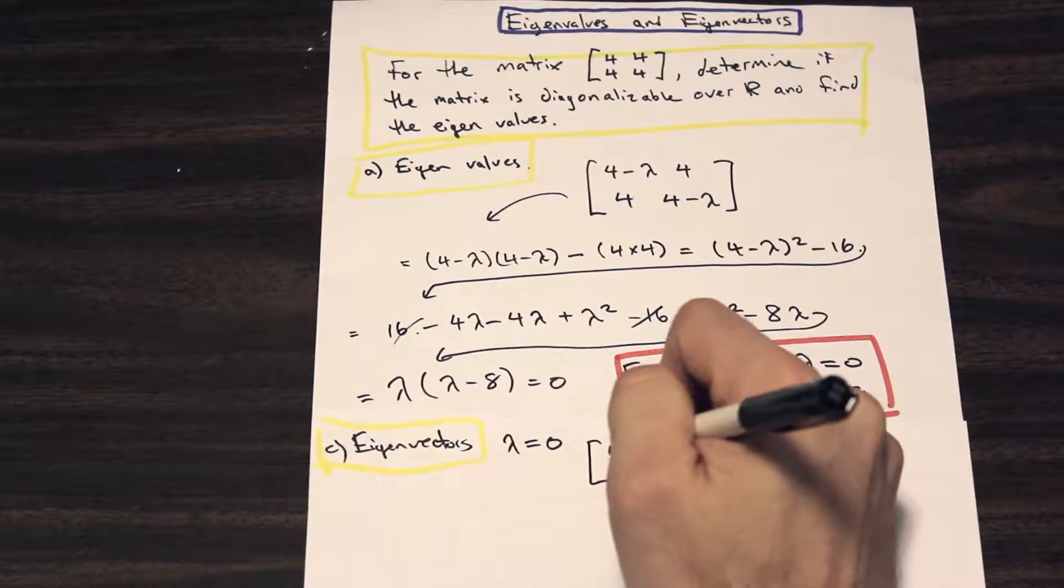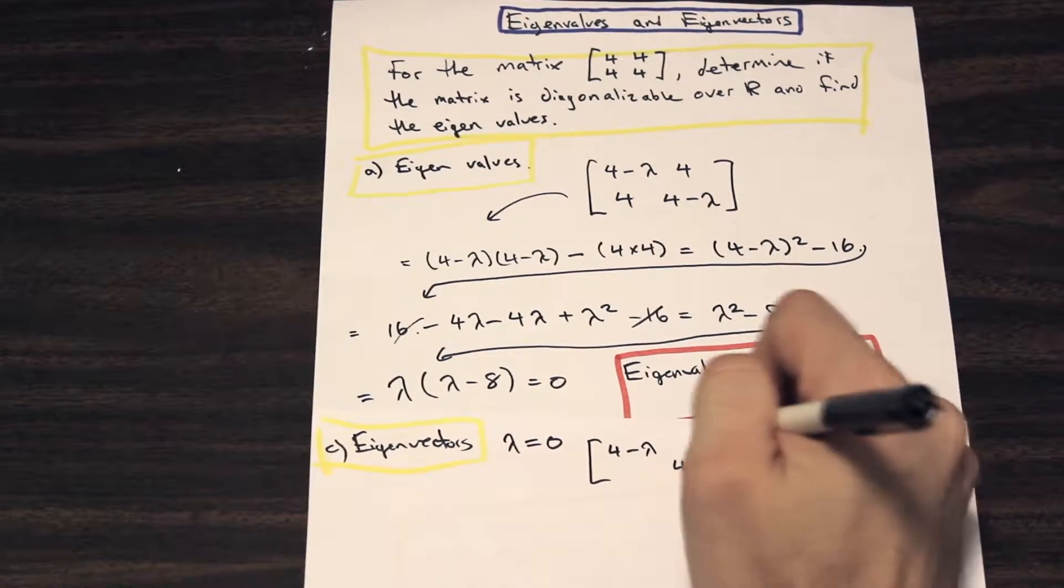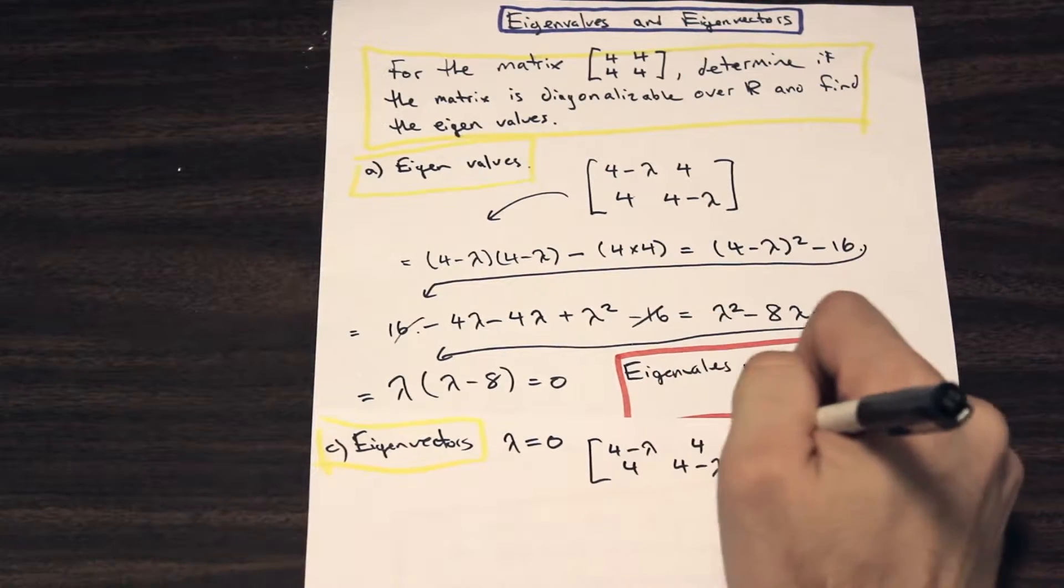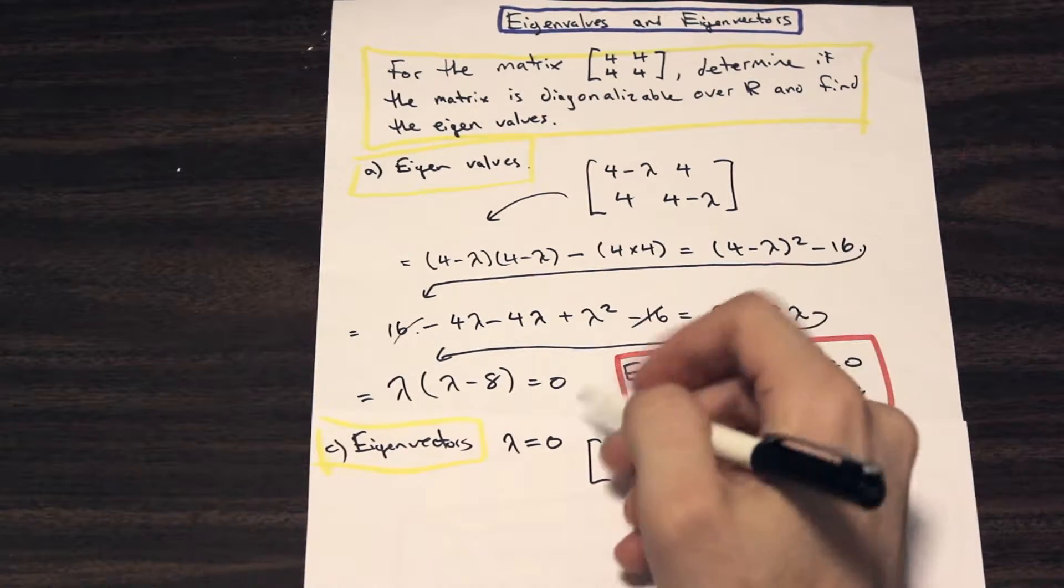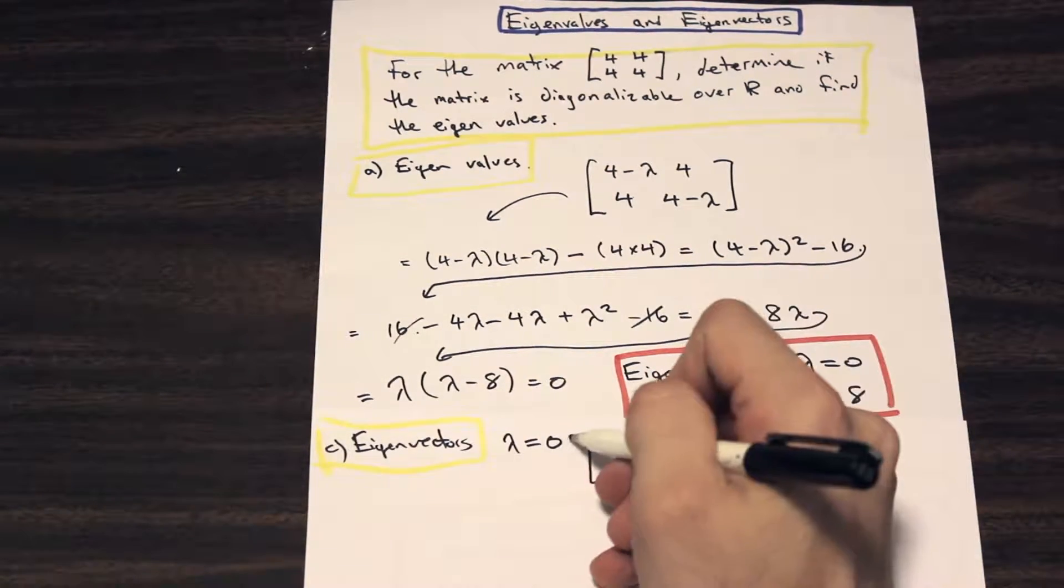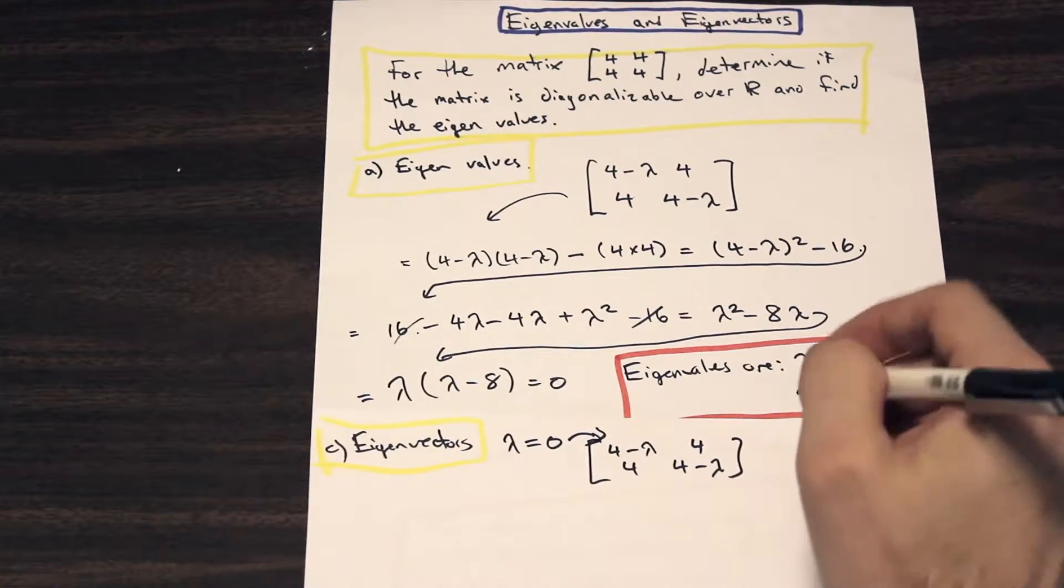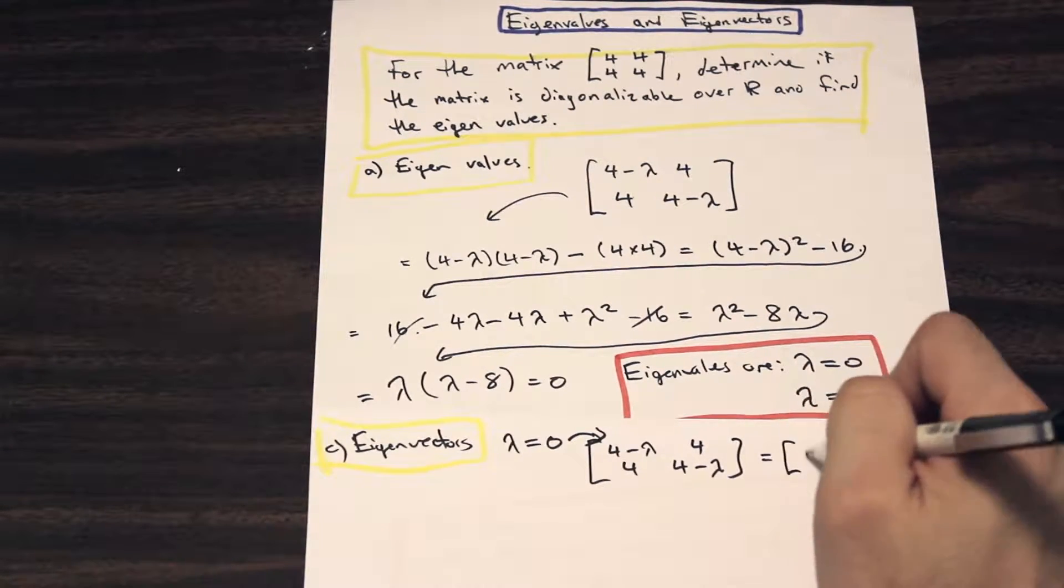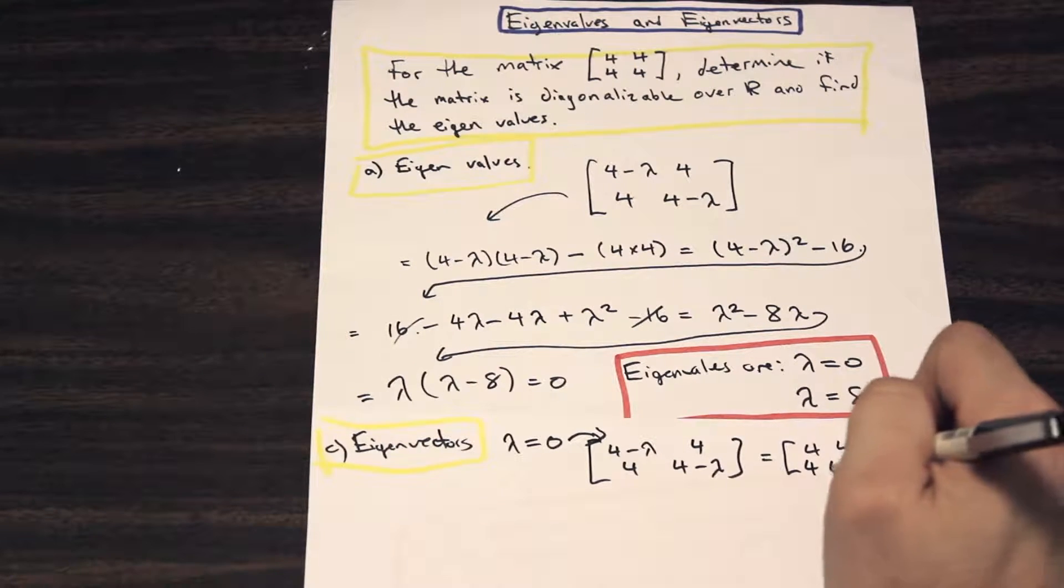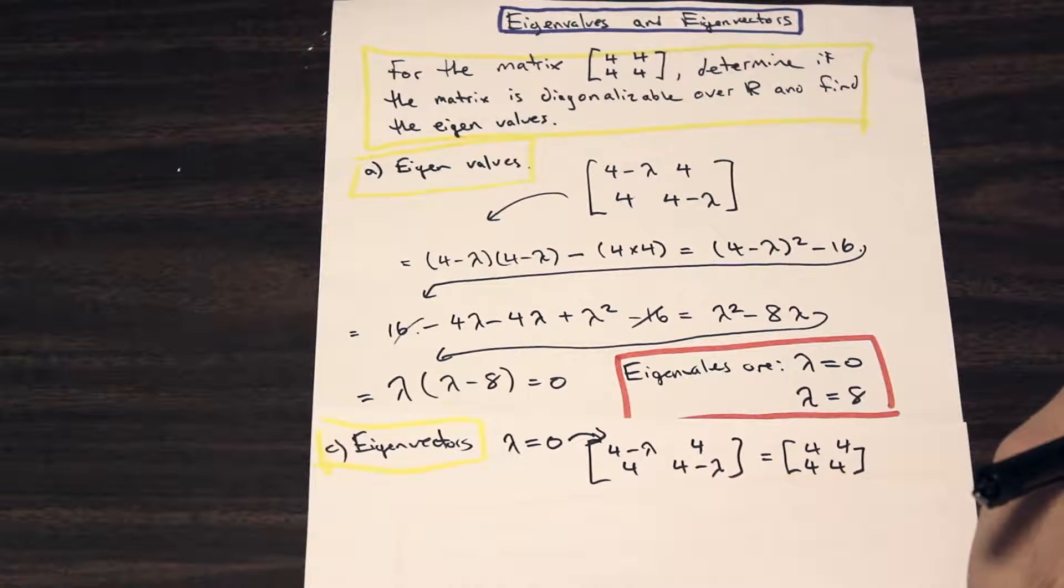And we are going to rewrite our matrix with lambdas subtracted from the diagonals. And we're going to go ahead and plug this value in to this matrix. And you'll see that we get exactly the same thing as we had before.